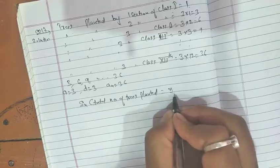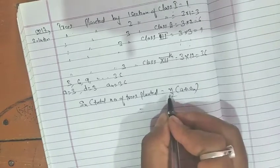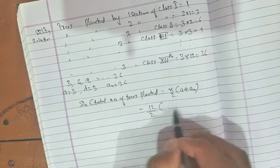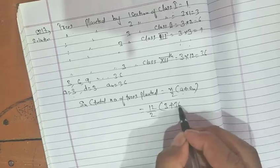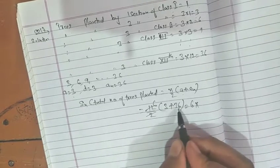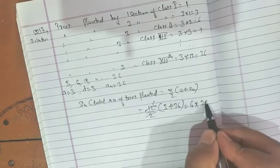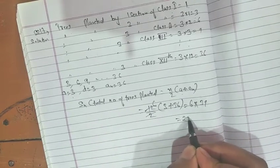Formula is n upon 2, a plus an last term. n is 12 upon 2, first term is 3, and last term is 36. So 2, 6, 12 will be 6 into 36 plus 3, which is 39. 36 into 6, multiply, it will be 234.